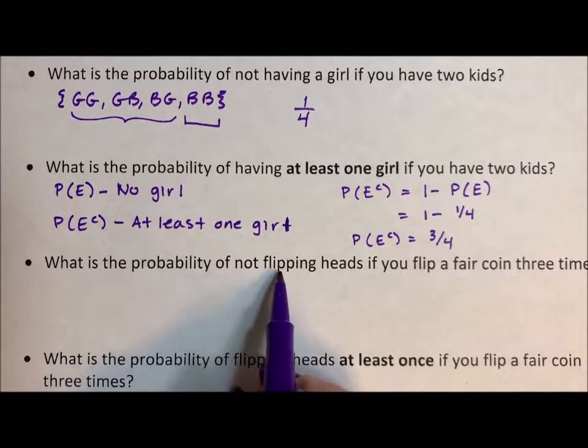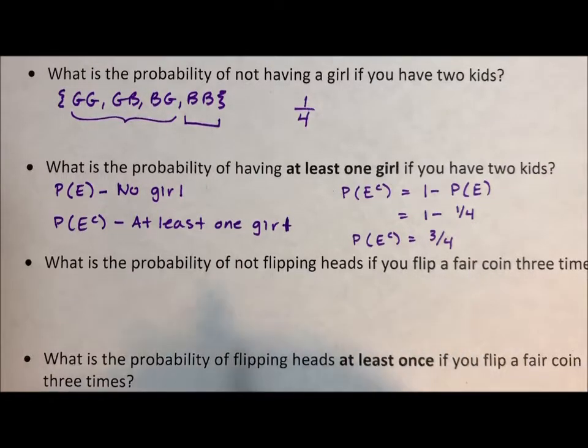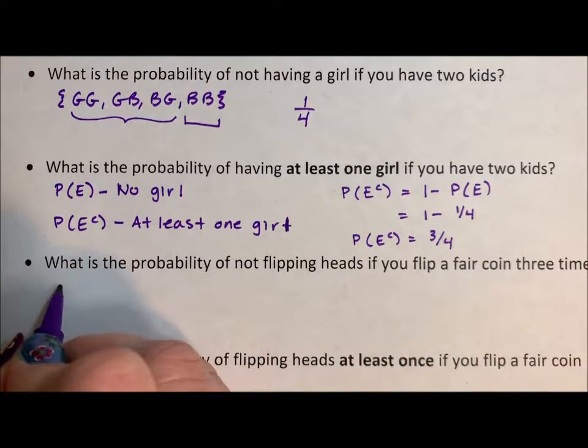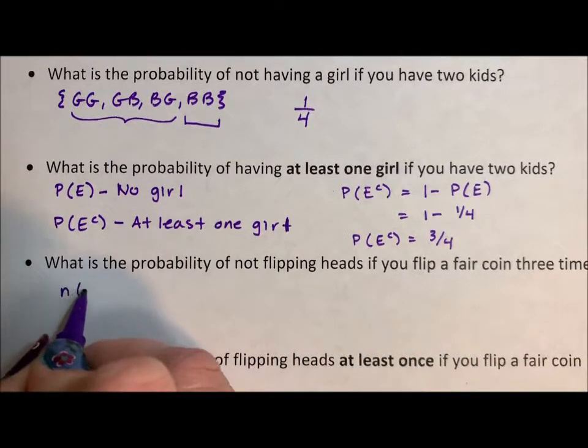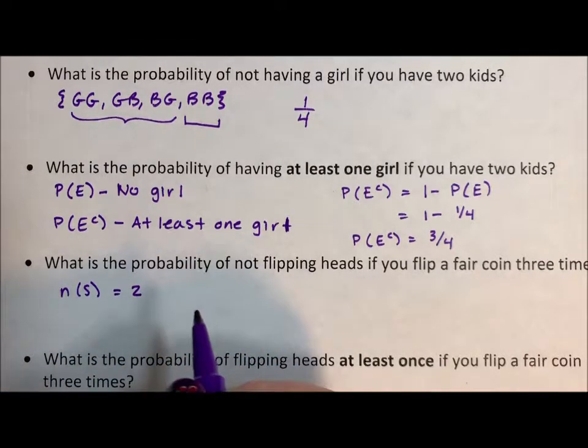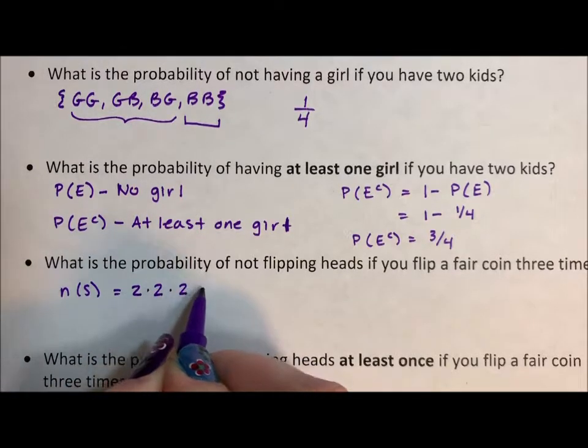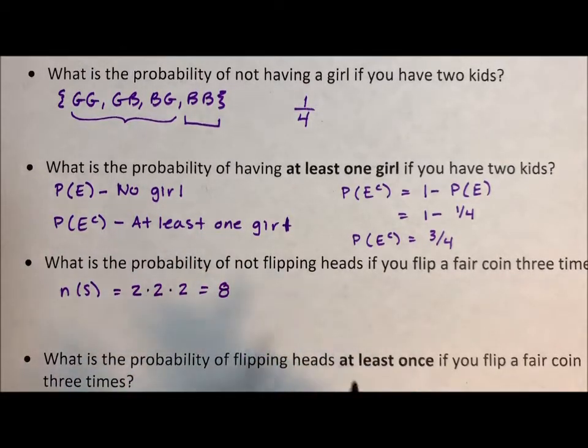What is the probability of not flipping heads if you flip a fair coin three times? Well, the number of elements in the sample space, if you're flipping a coin three times, is two options for the first flip, two options for the second flip, two for the third. So there's a total of eight options.